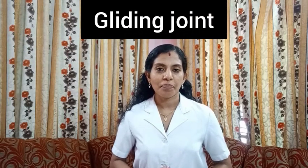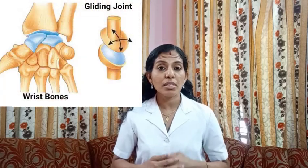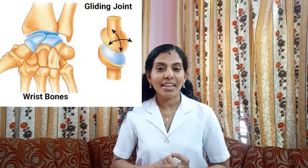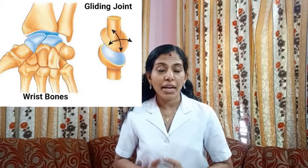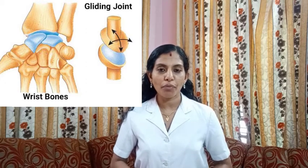The next one is gliding joint. In this type of joint, the bones can slide over each other. It is seen in the wrist and ankles. It allows side to side movement as well as backward and forward movement. So these are the different types of movable joints in our body.